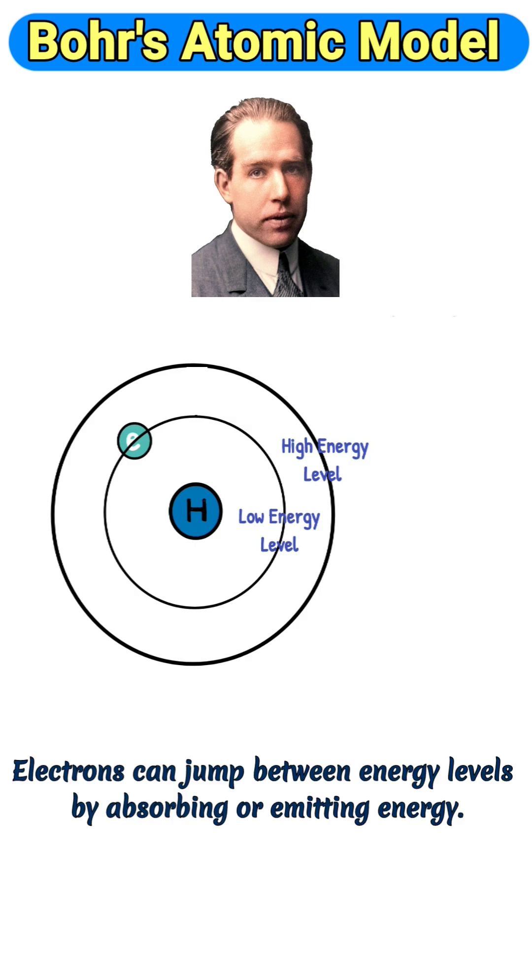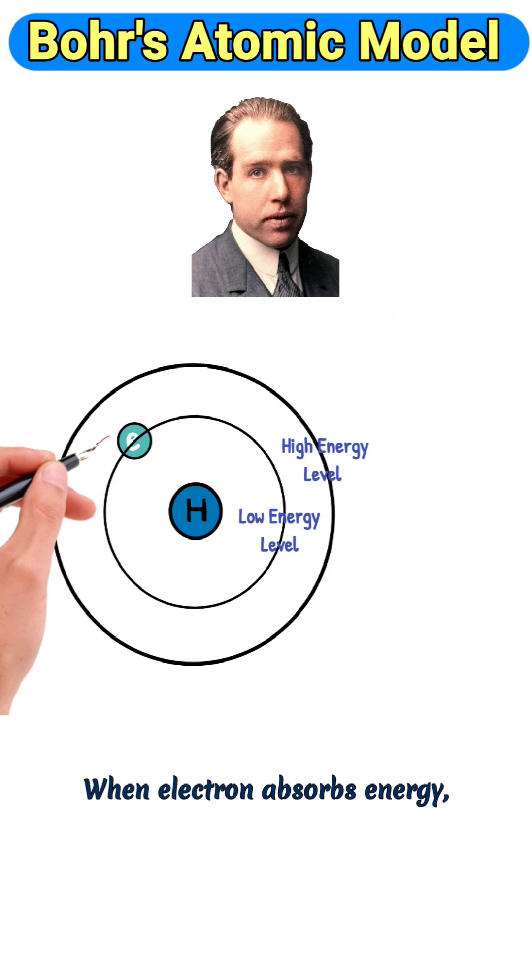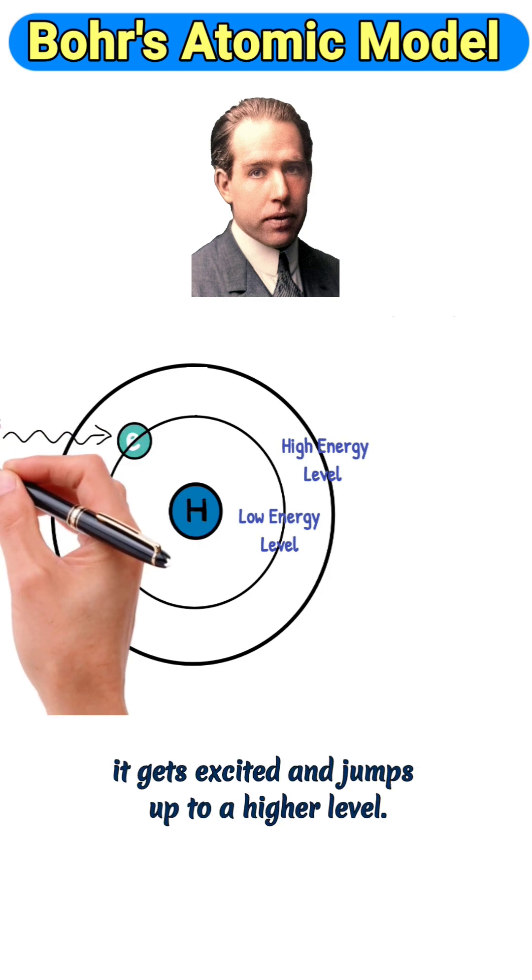Electrons can jump between energy levels by absorbing or emitting energy. When an electron absorbs energy, it gets excited and jumps up to a higher level.